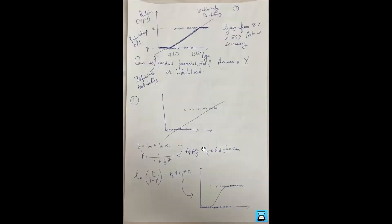The best approach is to take y = b0 + b1*x1 as the equation of the line, then apply a sigmoid function where p represents probabilities. In this case there are two decisions, yes or no, but we work with probabilities — what is the probability of a customer of a certain age buying the product? We use the sigmoid function where p is the probability and the formula is 1 over 1 plus e to the power minus y.